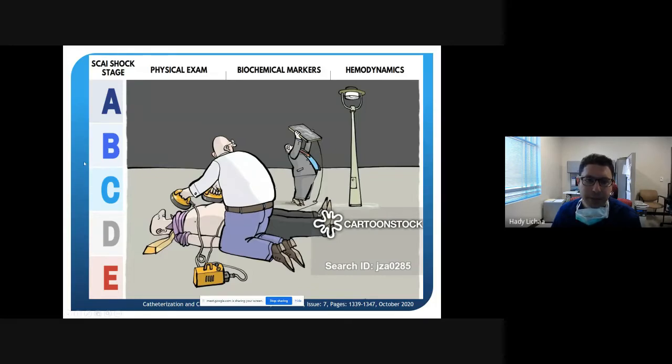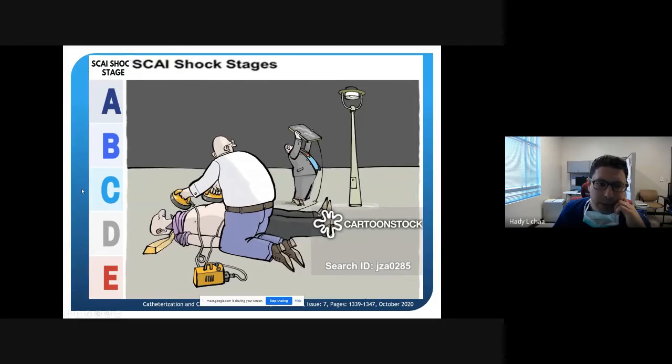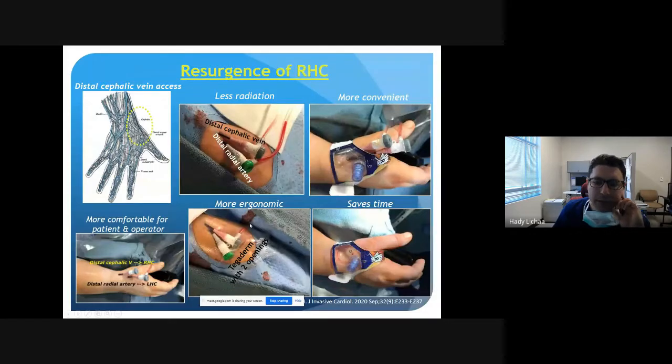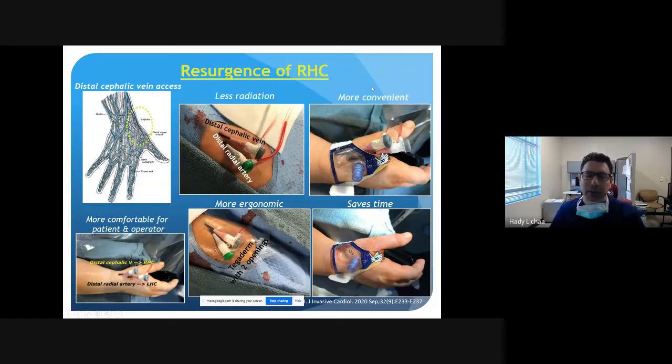This relies on specific physical examination findings of hypoperfusion and congestion, biochemical markers of lactate, creatinine, liver enzymes, and hemodynamics with pressures on your Swan catheter to make the diagnosis. Why is it important? Because it correlates with clinical outcomes. A cardiogenic shock class E will do way worse than a class B. Cardiac arrest, whenever it happens, even if it's on class stage B, if someone has cardiac arrest, this is a huge implication to the prognosis. Right heart cath has resurged. We all trained in an era where right heart cath was kind of belittled. Recently, we have picked up doing right heart cath on very sick patients because it affects our management. This is a new technique, minimally invasive, done from the anatomical snuff box that we published in Journal of Invasive Cardiology - less radiation, more convenient for the patient and operator, and saves time.